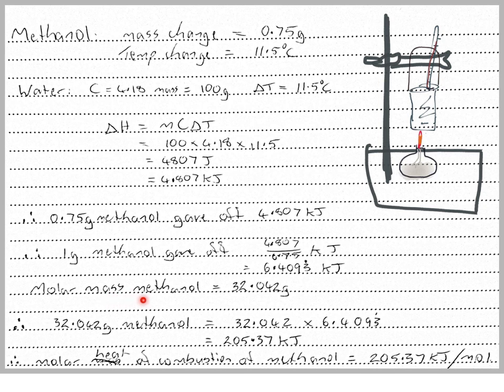The molar mass of methanol is 32.042 grams. Therefore, 32.042 grams of methanol gives off 32.042 times 6.4093 kilojoules.